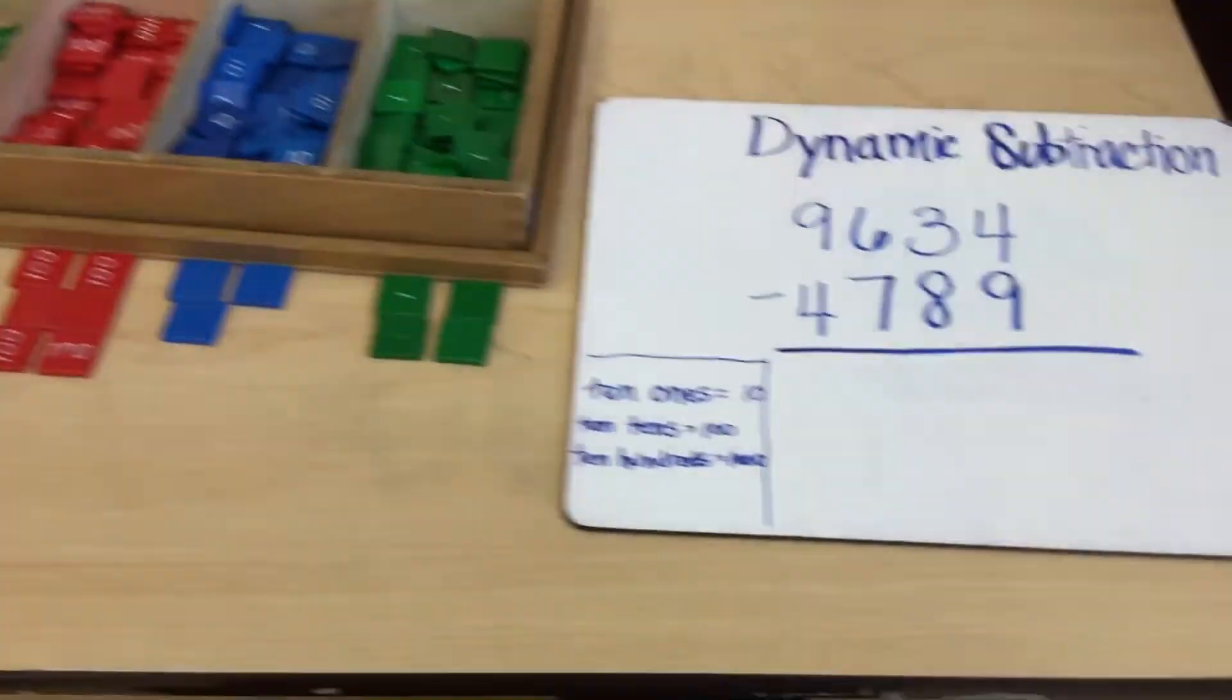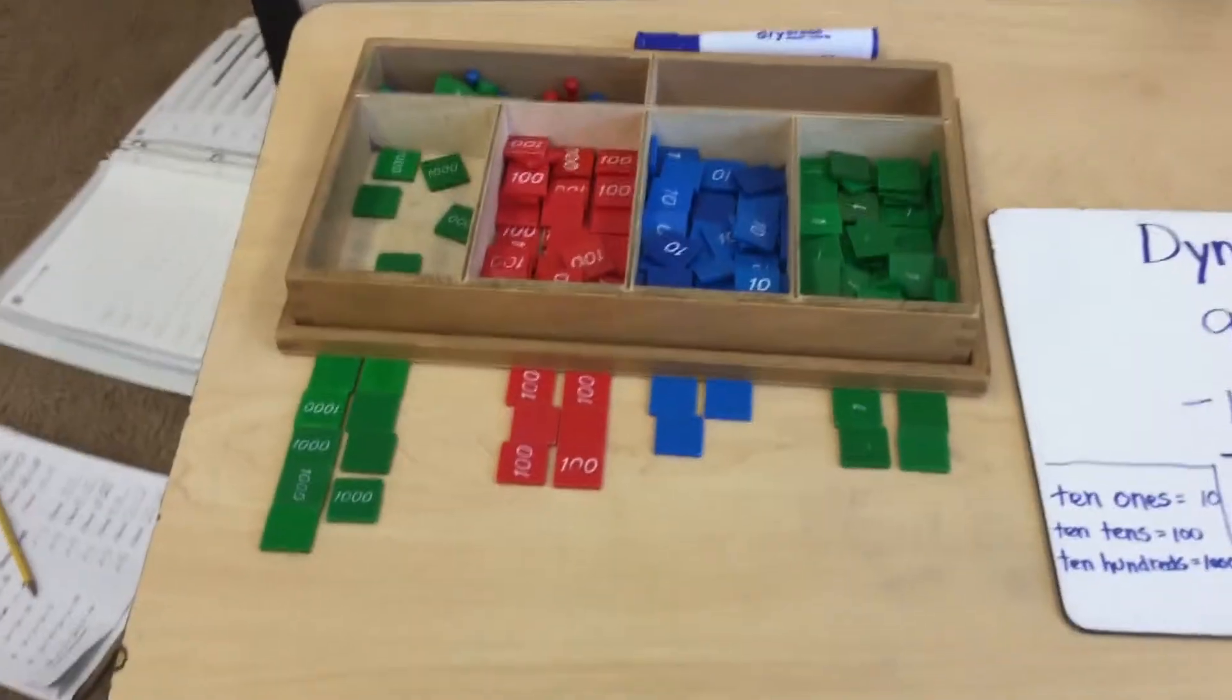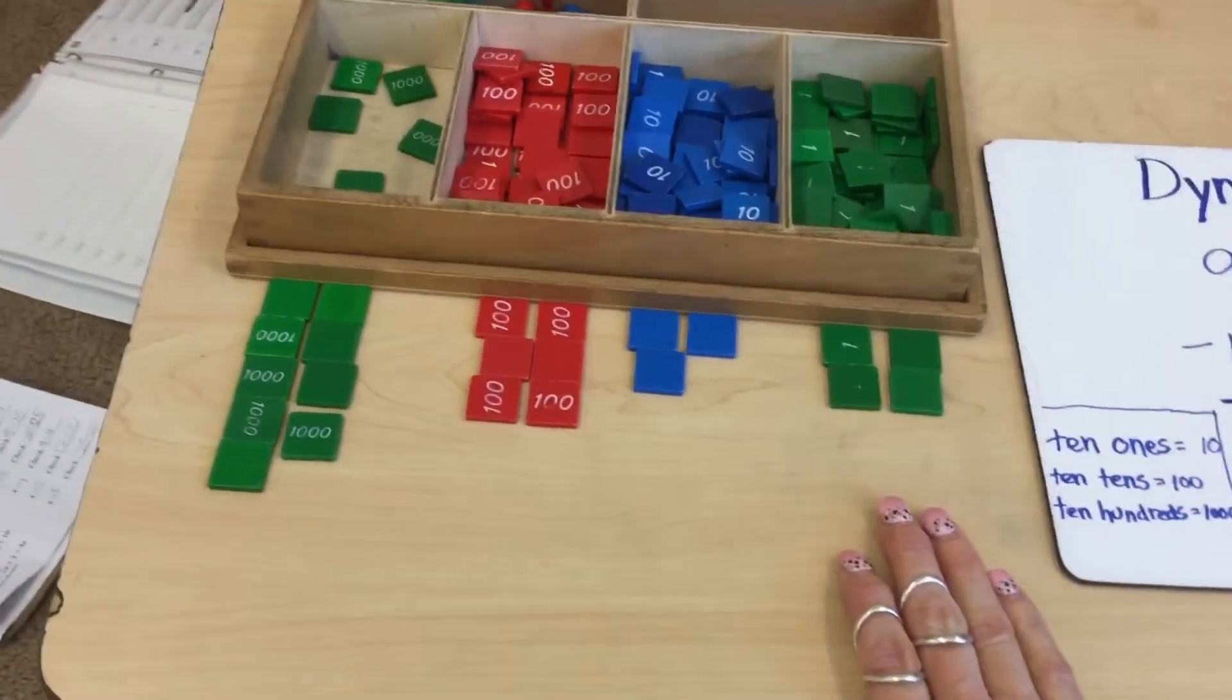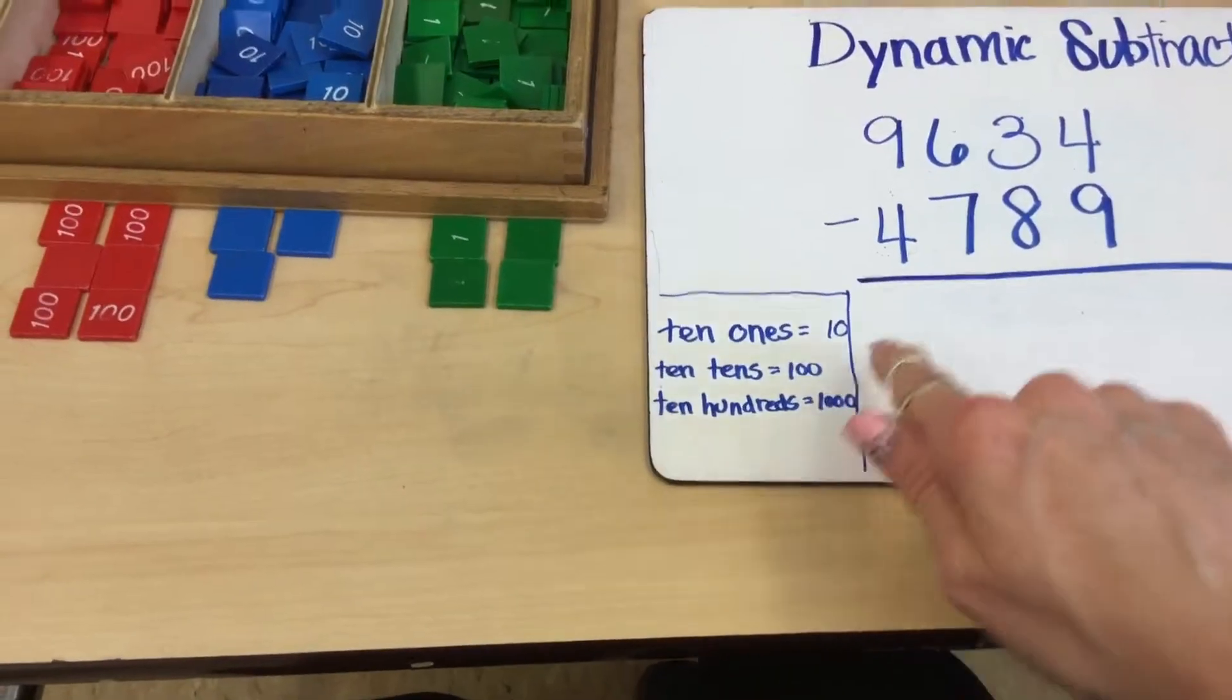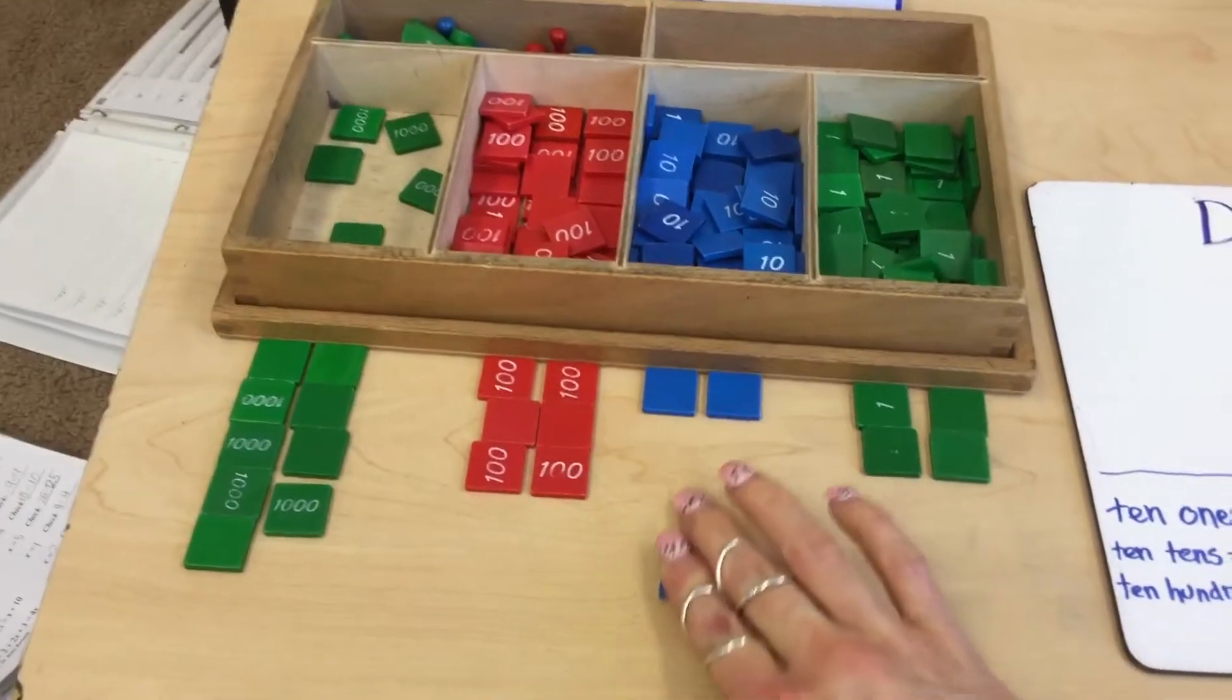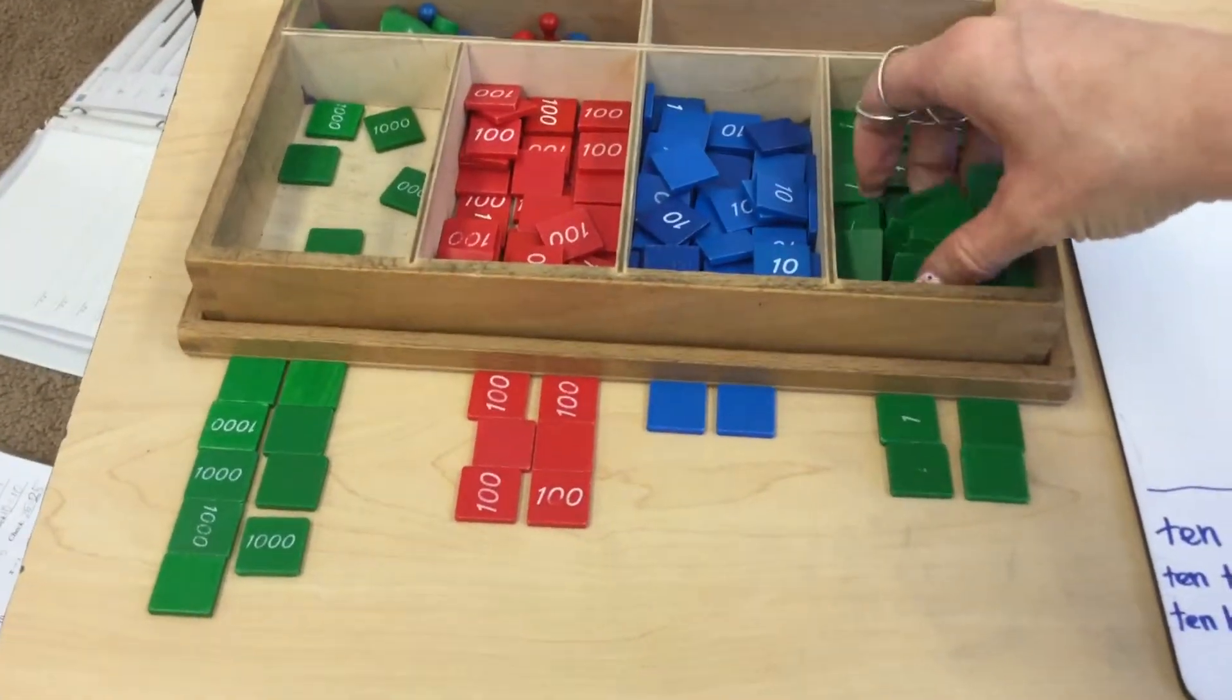So in this case I have four take away nine. Well I can't take away nine, I only have four. So I need some more ones. I need to find some more ones. Well if I recall, if I turn in a ten I can get ten ones. So I'm going to exchange one of my tens or cash it in and I'm going to get ten ones.